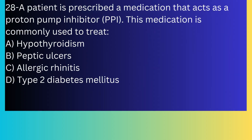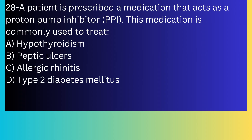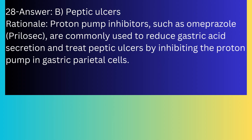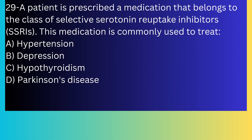Question number twenty-eight: A patient is prescribed a medication that acts as a proton pump inhibitor (PPI). This medication is commonly used to treat: A) Hypothyroidism, B) Peptic ulcers, C) Allergic rhinitis, D) Type 2 diabetes mellitus. The answer is B, peptic ulcers. Proton pump inhibitors such as omeprazole (Prilosec) are commonly used to reduce gastric acid secretion and treat peptic ulcers by inhibiting the proton pump in gastric parietal cells.